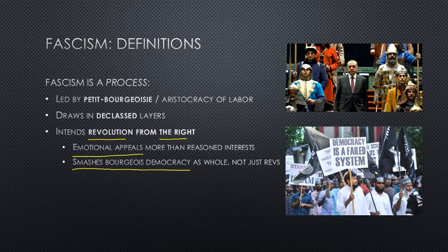This photo on the top is an example of emotional appeals. This is the Turkish president Tayyip Erdogan. Erdogan actually built a fake Ottoman palace in Turkey to welcome foreign dignitaries, complete with a staircase of Ottoman warriors on the left and right — an appeal to a pre-modern capitalist empire, almost a gesture of 'make Turkey great again.' The photo on the bottom is a march in the Maldives, a demonstration in favor of ISIS, with a sign rejecting Western bourgeois democracy.